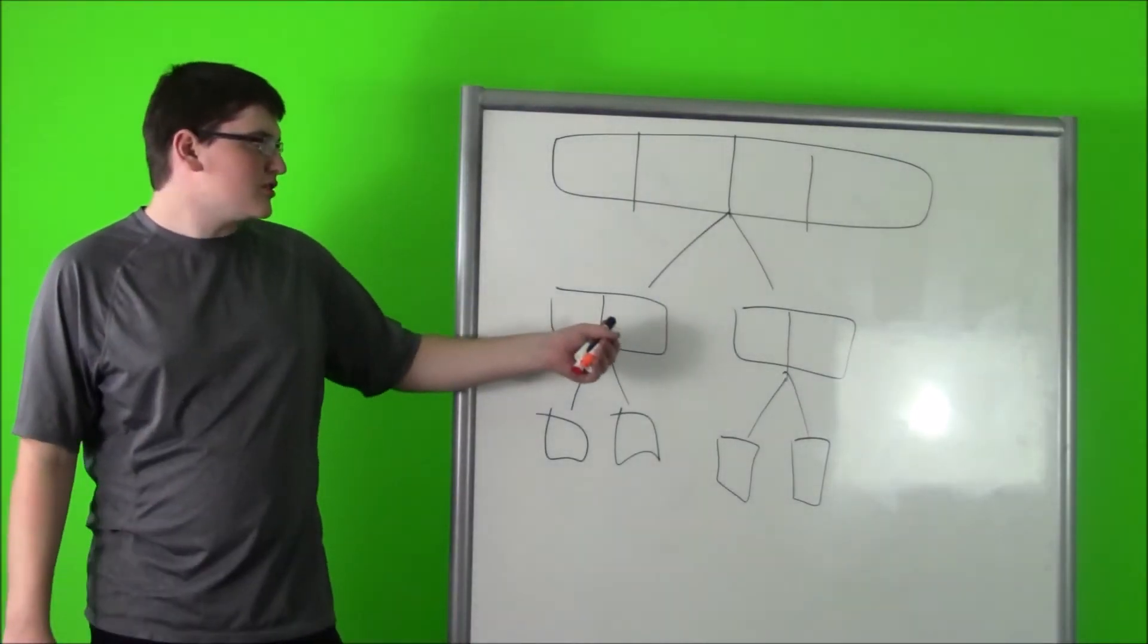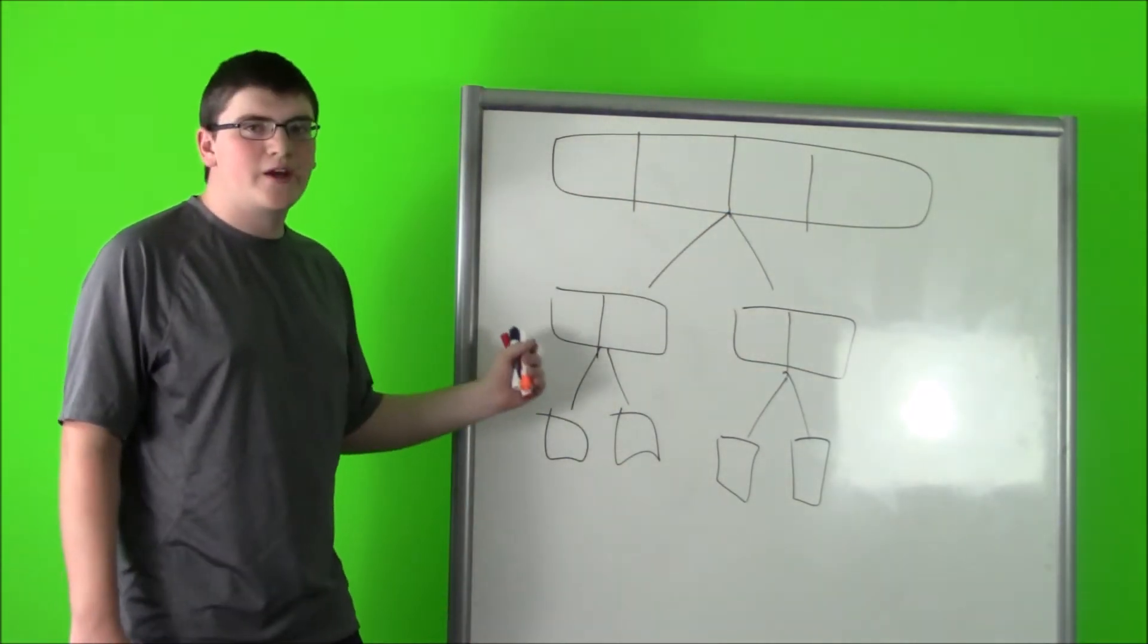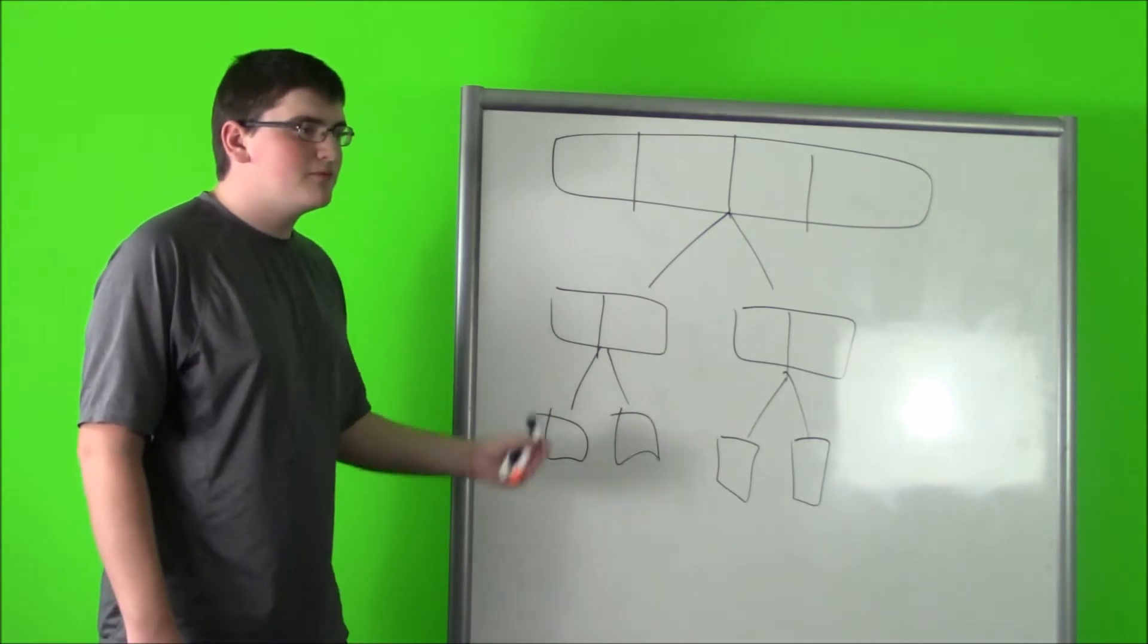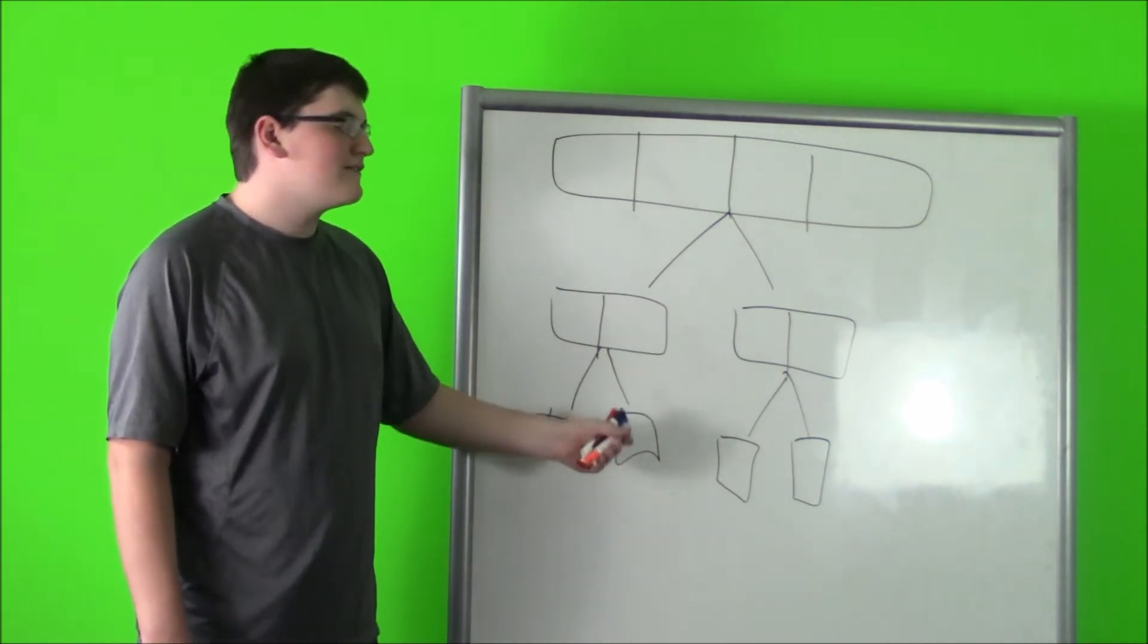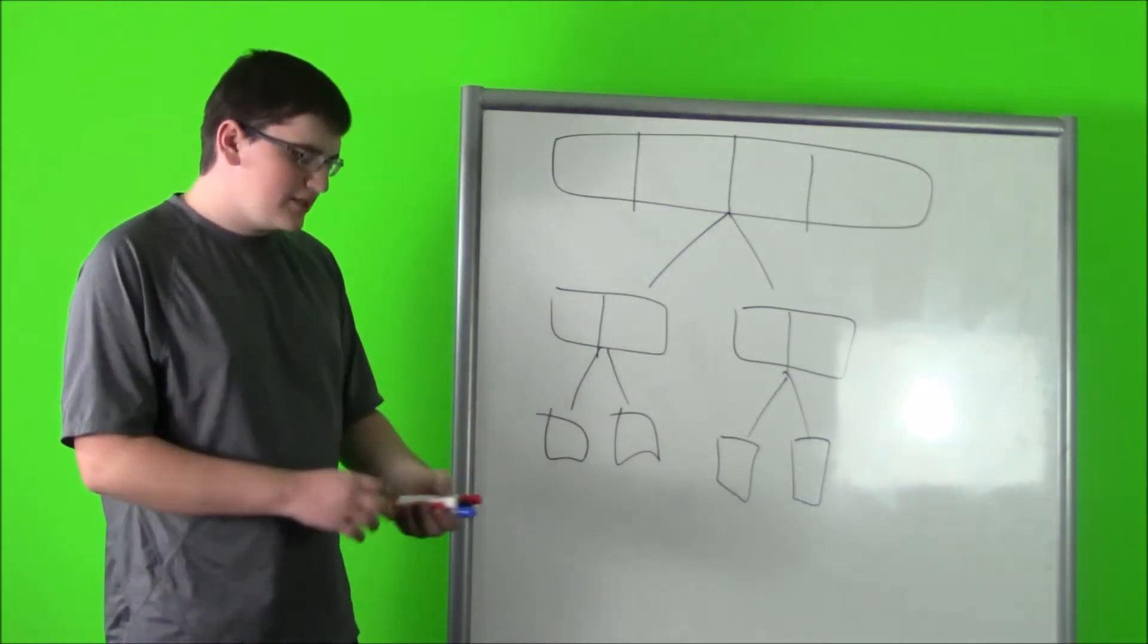Here's a visual of merge sort. It starts with an array of 4 and splits into 2 arrays of 2, then finally 4 arrays of 1. After that's done, it combines back into the big array, sorted.